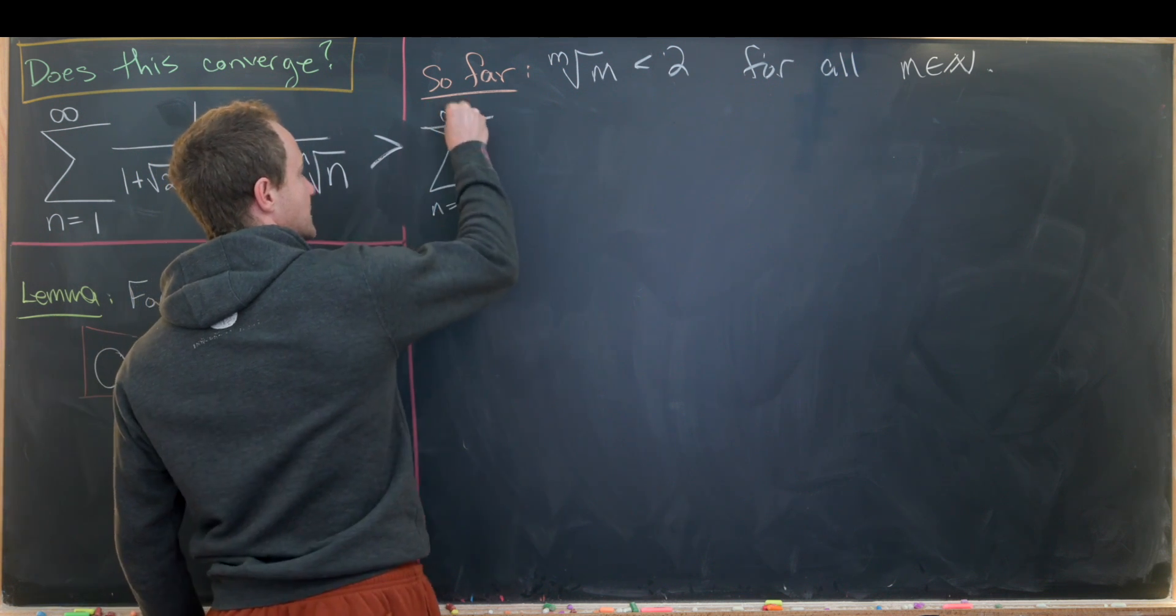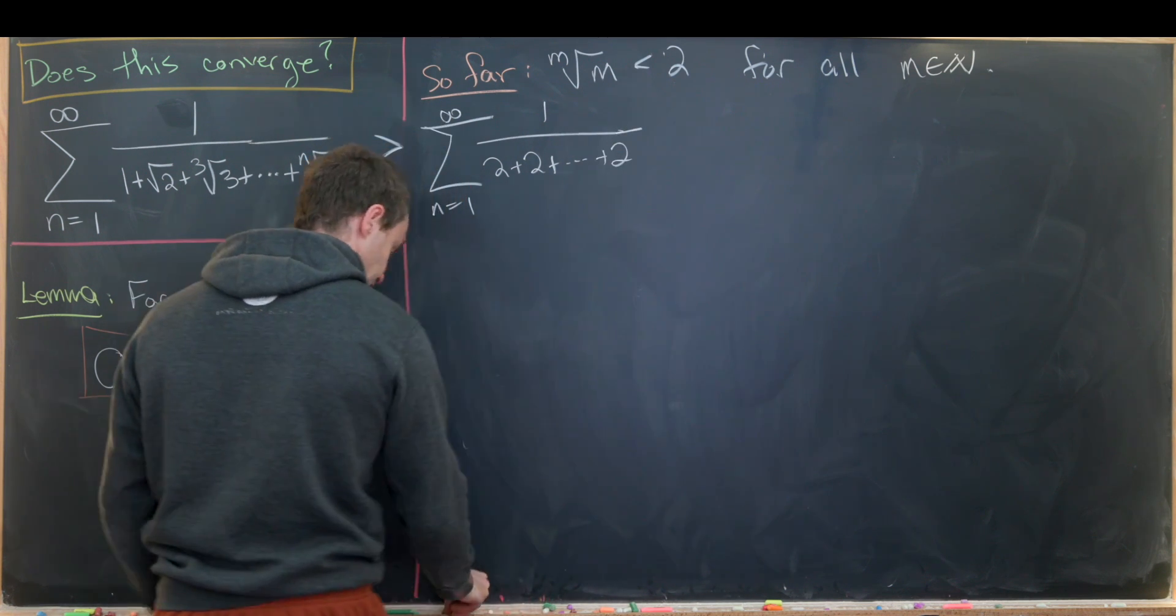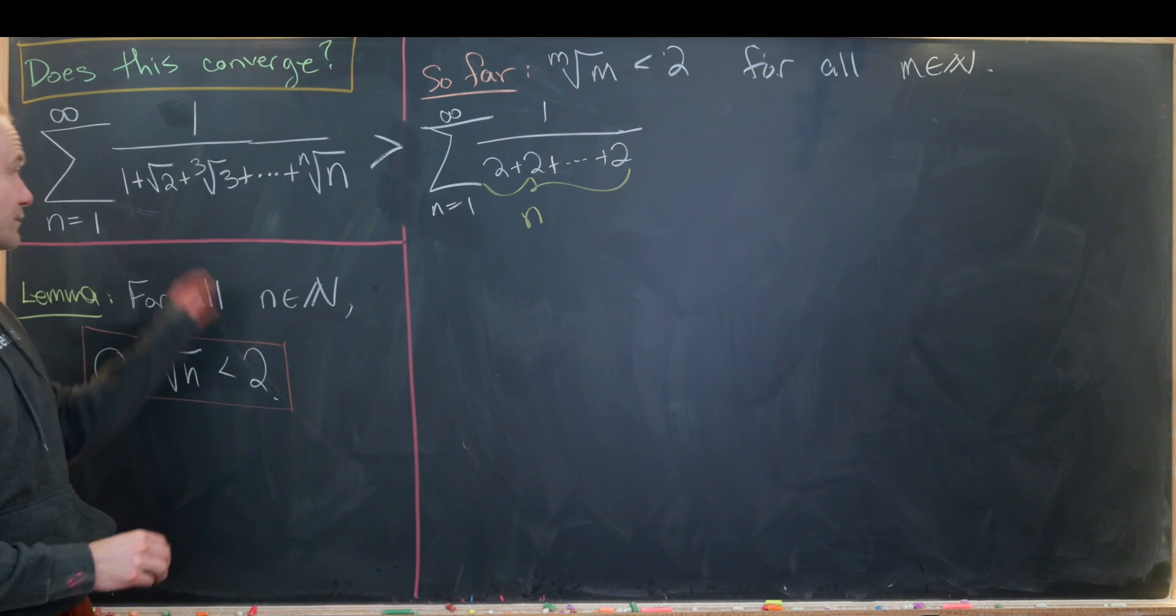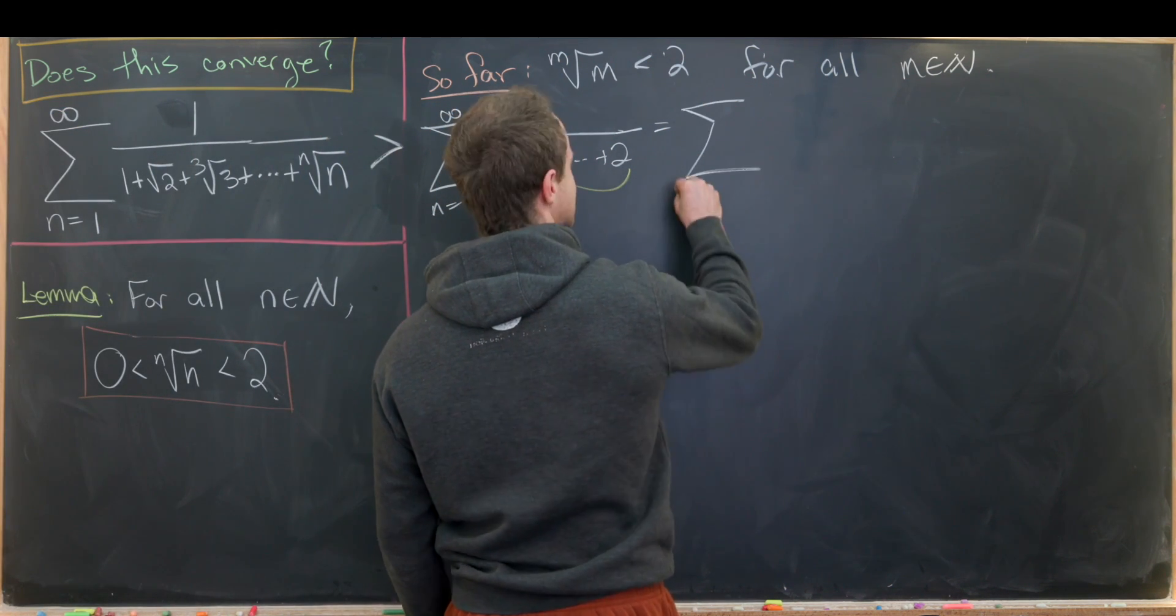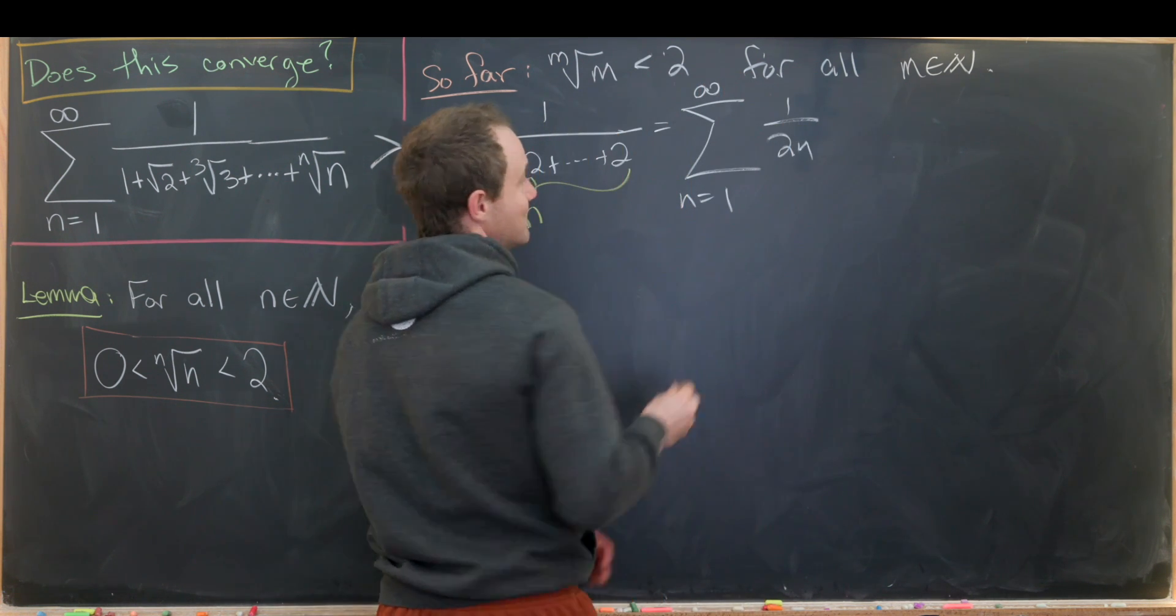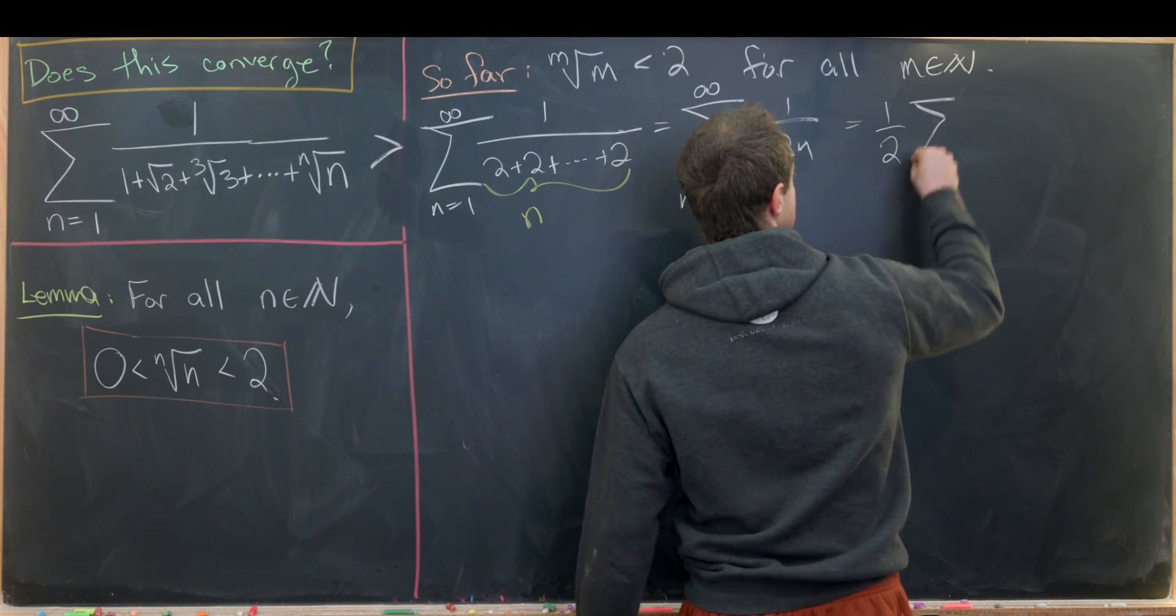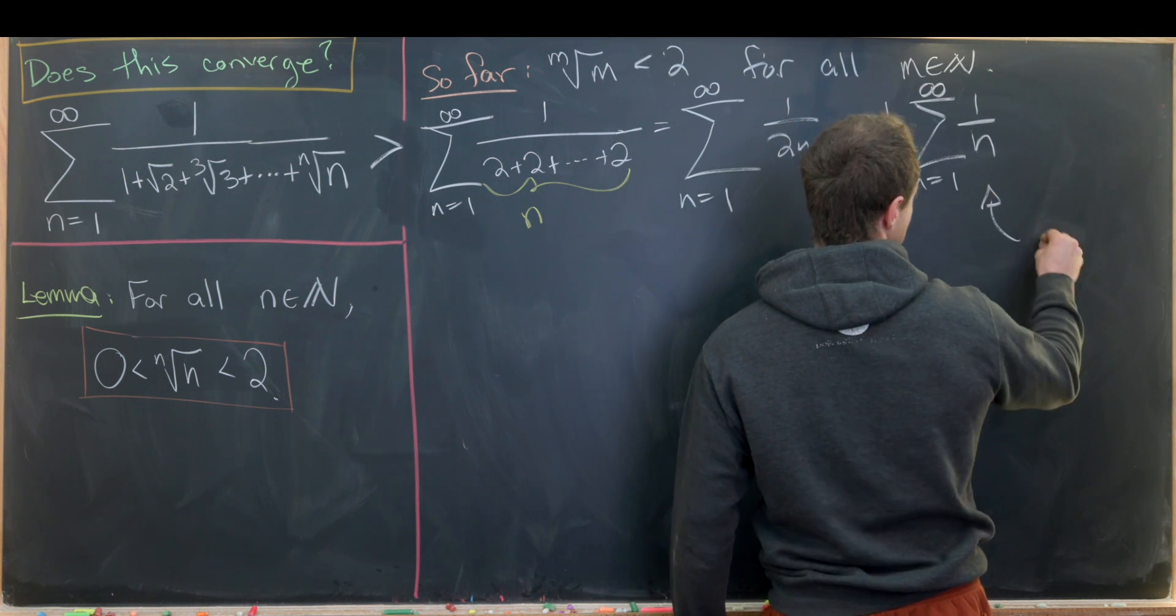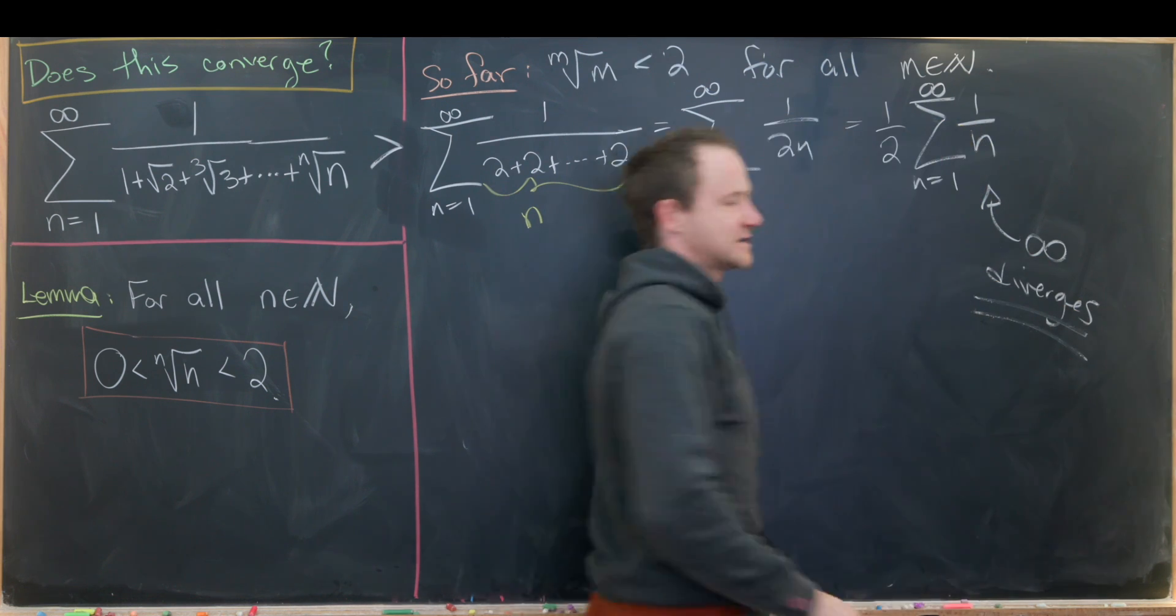And how many 2s do we have here? We have exactly n 2s because we've replaced all of these with 2. But now let's notice that's the same thing as the sum as n goes from 1 to infinity of 1 over 2 times n. But that clearly diverges because that's just one half the harmonic series. So this is one half the sum as n goes from 1 to infinity of 1 over n. Which, like I said, diverges as it is the famous harmonic series.